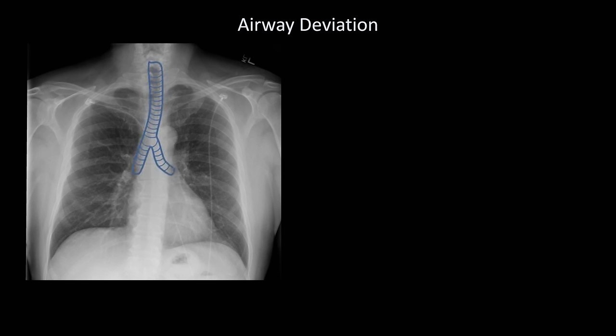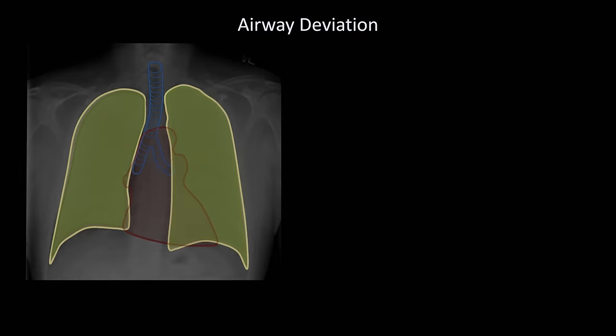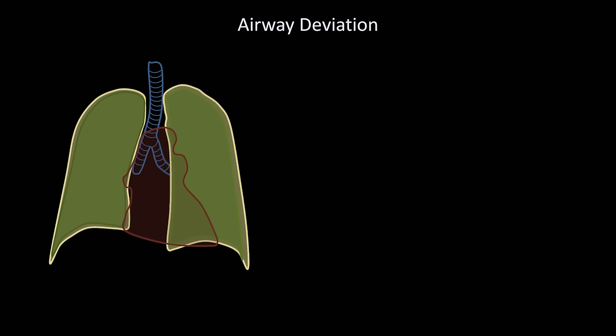We'll start off with a normal chest x-ray and superimpose an outline of the airways, the heart, the lungs, and around the lungs, the pleura. What happens when air is introduced into the pleural space, a condition known as a pneumothorax? Since the intrapleural pressure is usually lower than atmospheric pressure, more and more air will begin to accumulate, and as it does so, the lung on that side becomes compressed.